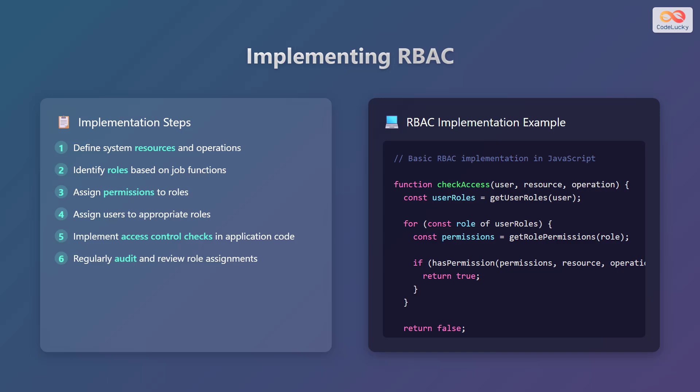Here's an example of a basic RBAC implementation in JavaScript. This function checks if a user has access to a resource by verifying their roles and associated permissions.